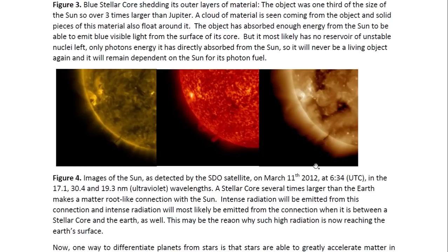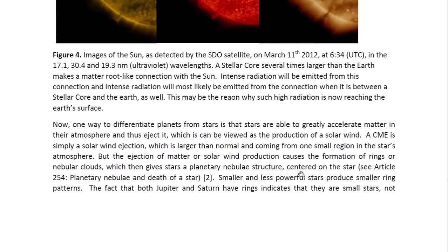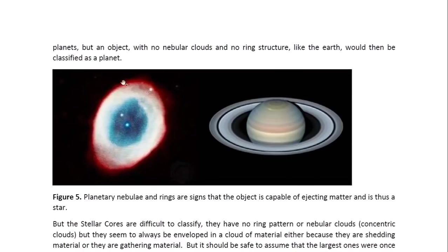This may be the reason why such high radiation is now reaching the Earth's surface. One way to differentiate planets from stars is that stars are able to greatly accelerate matter in their atmosphere and thus eject it, which can be viewed as the production of solar wind. A CME is simply a solar wind ejection which is larger than normal and coming from one small region in the star's atmosphere. But the ejection of metal solar wind production causes the formation of rings or nebular clouds, which then gives stars a planetary nebula structure centered on the star, and this is what we see here.